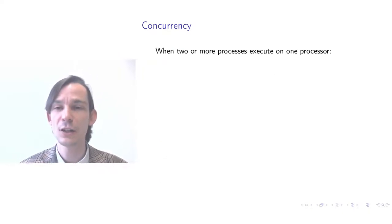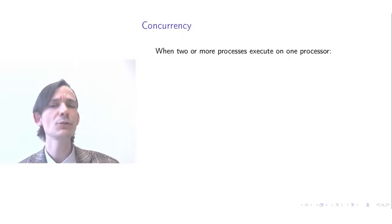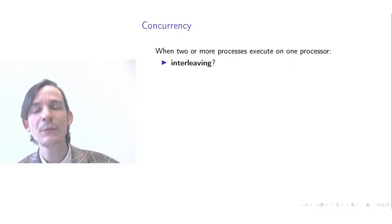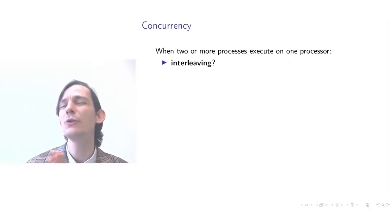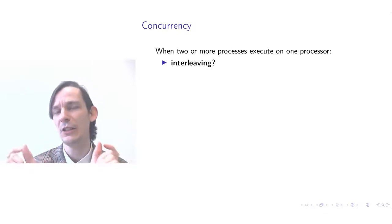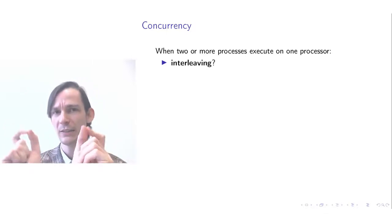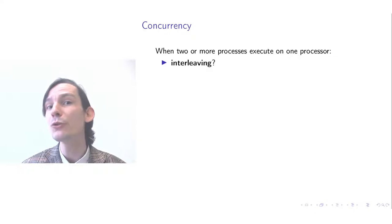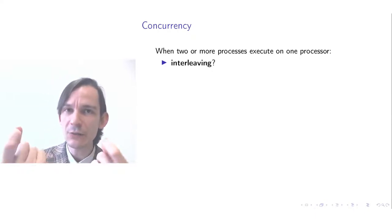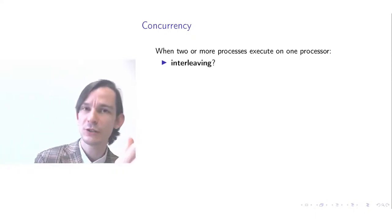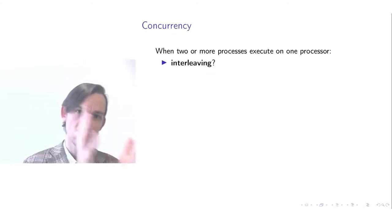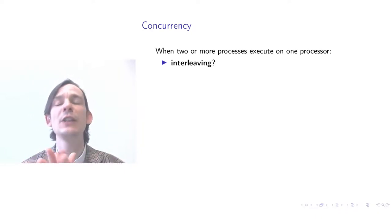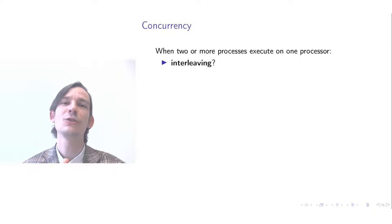Whenever two or more processes are executed on a single processor, consider how this is accomplished. We saw two processes with control points moving at different speeds, but with only one physical processor. This interleaving — first running the process on the left, then on the right, then on the left, etc. — can be accomplished by scheduling processes on the processor.